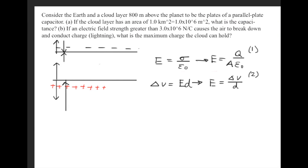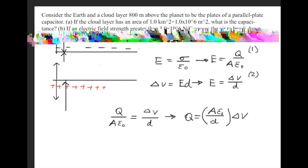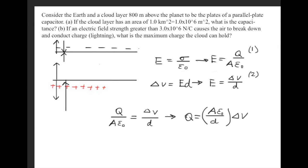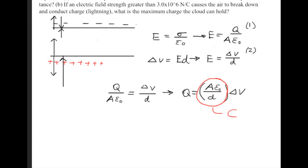What we're going to do is combine equation 1 and equation 2 and set them equal to each other. If we go ahead and solve for Q, we get the capacitance formula. This term right here is the capacitance, which we denote with the letter C. So we get that the capacitance is equal to the area times epsilon naught over D.